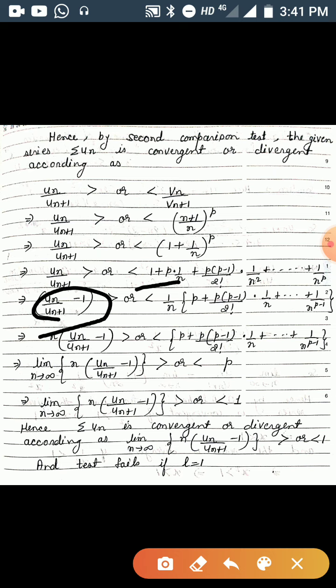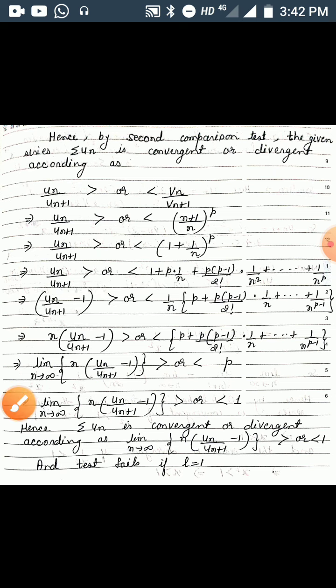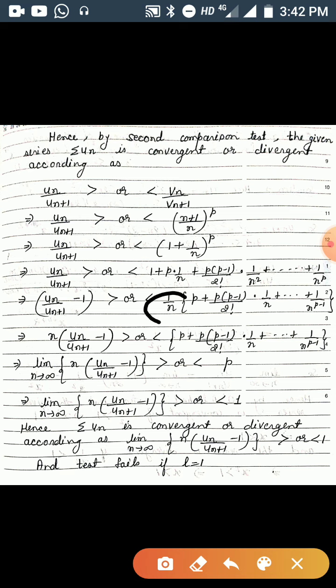Taking 1/n as a common factor from the right-hand side, we get (1/n)*[p + p(p-1)/(2!*n) + ... + 1/n^{p-1}]. Shifting this 1/n to the left-hand side gives n*(u_n/u_{n+1} - 1) is greater than or less than p + p(p-1)/n + ... + 1/n^{p-1}. Taking the limit as n tends to infinity on both sides, we get: limit as n→∞ of n*(u_n/u_{n+1} - 1) is greater than or less than p.